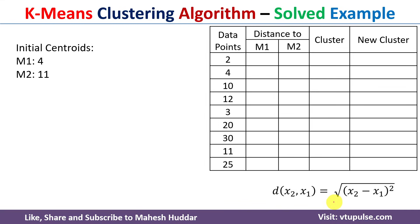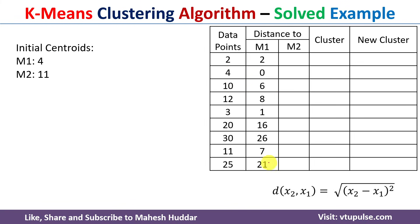The Euclidean distance formula for two points x1 and x2 is: distance = sqrt((x2 - x1)^2). For data point 2 with m1 = 4: sqrt((4-2)^2) = sqrt(4) = 2. For data point 4 with m1 = 4: sqrt((4-4)^2) = 0. For data point 10 with m1 = 4: sqrt((4-10)^2) = 6. For data point 2 with m2 = 11: sqrt((11-2)^2) = 9. We calculate all other distances similarly.